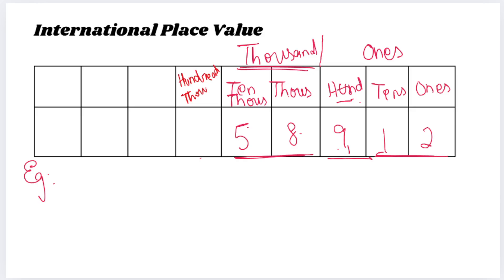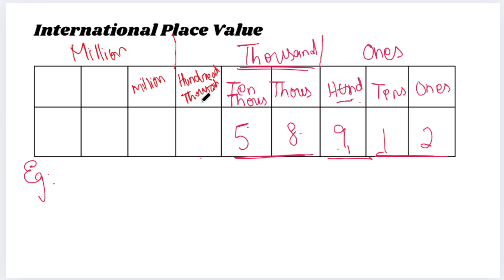I'm very sorry, I forgot to teach you this one thing. After ten thousand comes hundred thousand, and then comes million. So if you have already seen my international place value video, please add this section — hundred thousand — before million.